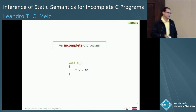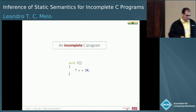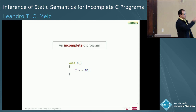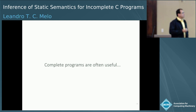We have a better definition of incompleteness in the paper, but for the purpose of the presentation, incompleteness is the name of a type that is not present in the program, like in this case. And complete programs are often useful, at least real world programs — we want to make them useful.